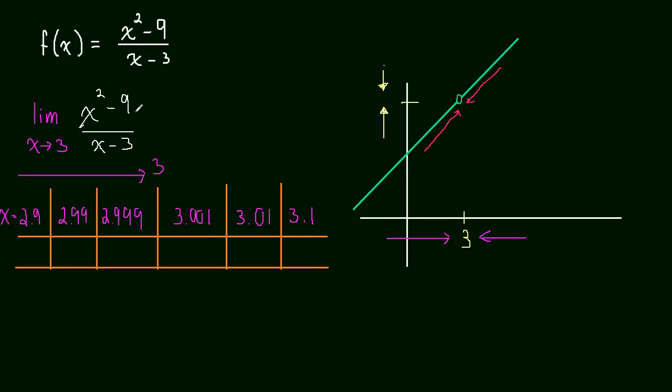So all of these values, when we plug them into our function, will actually return numbers, right? As long as we don't plug 3 in, we'll get a number back.